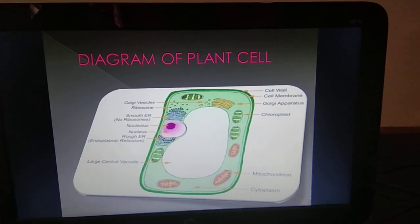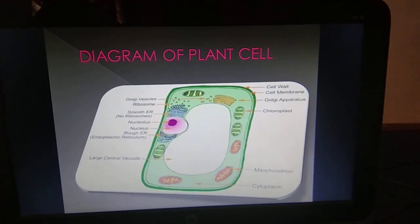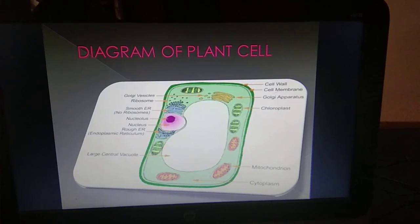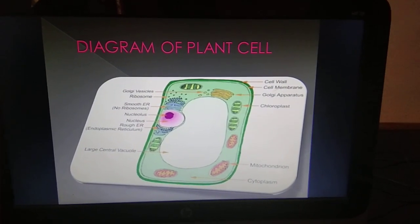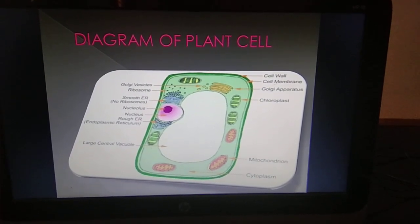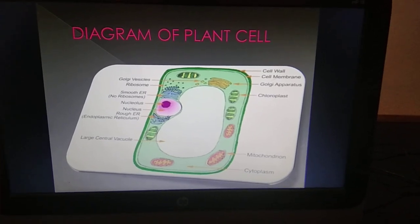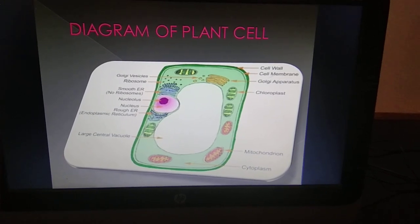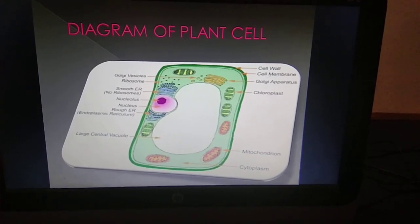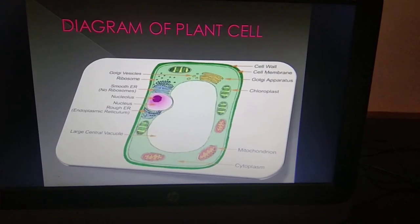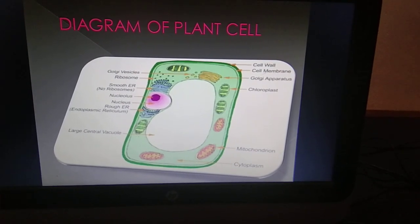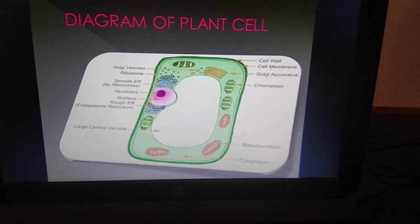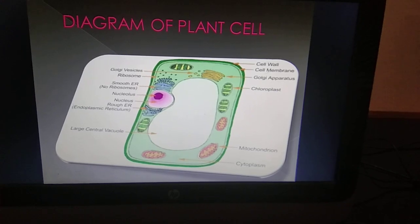As you can see, this is a diagram of plant cell. It consists of many cell organelles like ribosomes, smooth endoplasmic reticulum, rough endoplasmic reticulum, nucleolus, nucleus, large central vacuole, cytoplasm, mitochondria, chloroplast, Golgi apparatus, cell membrane, and cell wall.